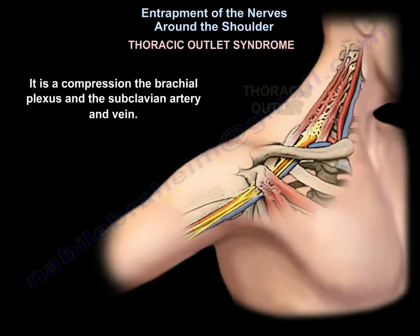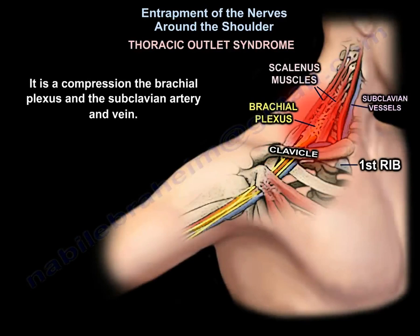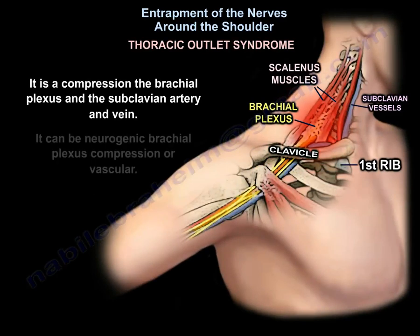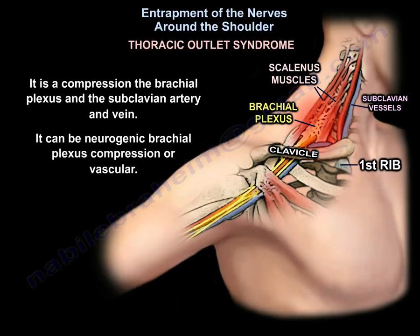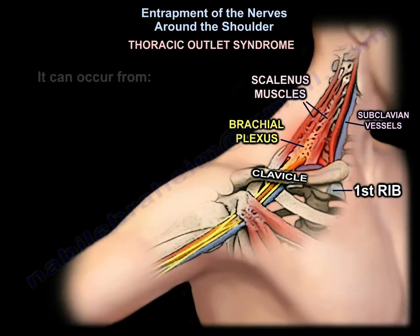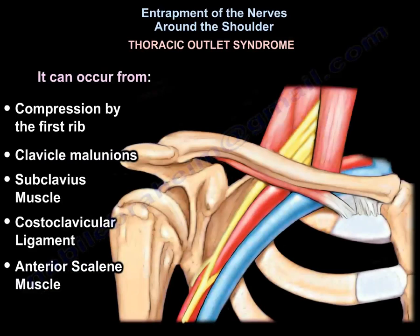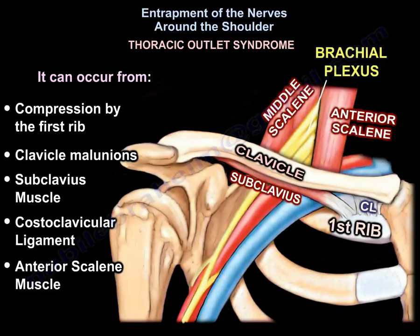Thoracic outlet syndrome results from compression of the brachial plexus and the subclavian artery and vein. It can be neurogenic brachial plexus compression or vascular. Neurogenic brachial plexus compression is the most common, about 95%. It can occur from compression by the first rib, clavicle malunions, and other conditions.